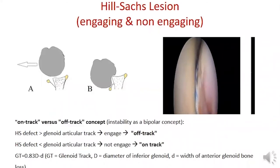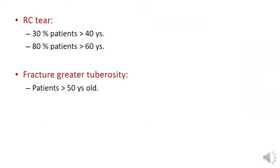The concept of on-track versus off-track considers instability as a bipolar problem. If the Hill-Sachs defect is larger than the glenoid articular track, it will engage and is called off-track; if smaller, it will not engage and is called on-track. Rotator cuff tears and greater tuberosity fractures may also occur with shoulder dislocation, especially in older patients.